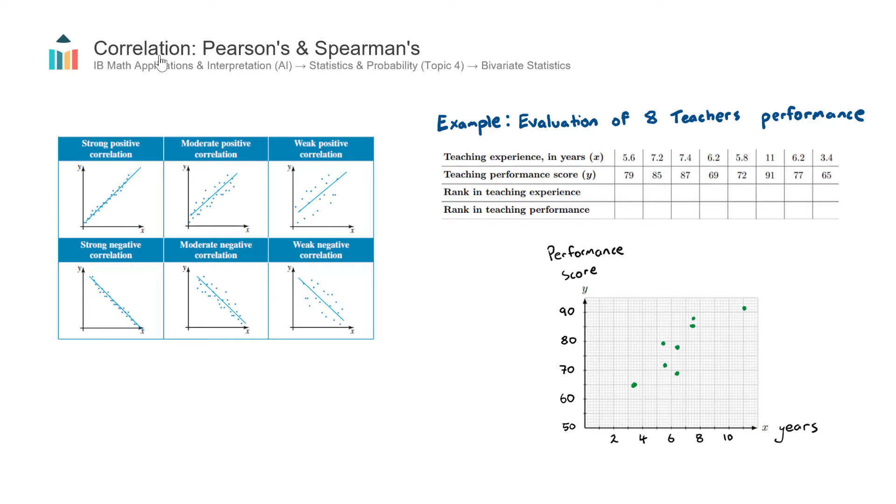In this video, we look at correlation, and there are two types of correlation that we encounter in the AI course. The first, and the most common, is called Pearson's, or the long name is Pearson's Product Moment Correlation Coefficient, and we call that R. And the second one is the Spearman's Rank Correlation Coefficient. It's not as common, but we do have it from time to time in questions, and we call that RS.